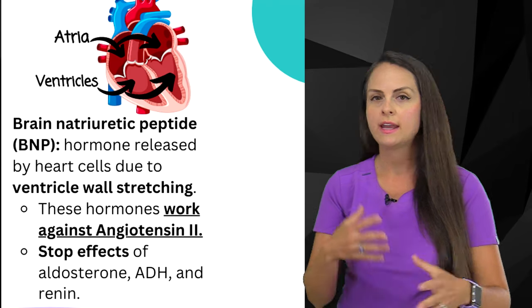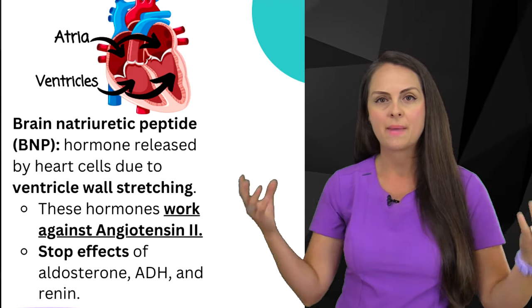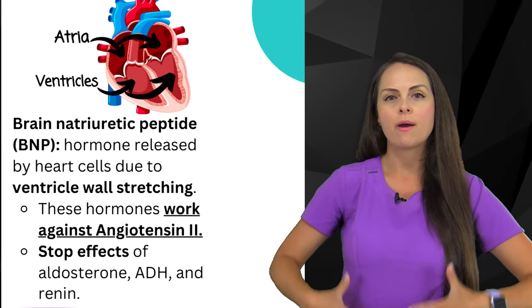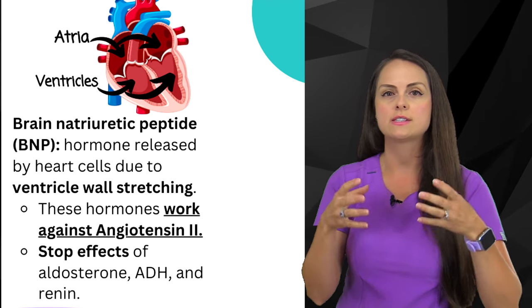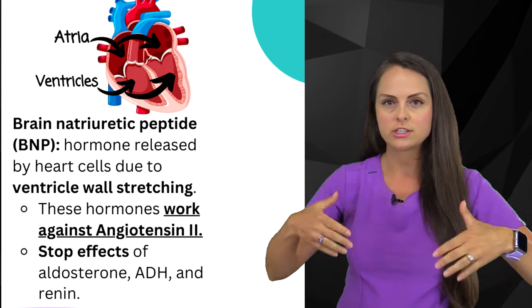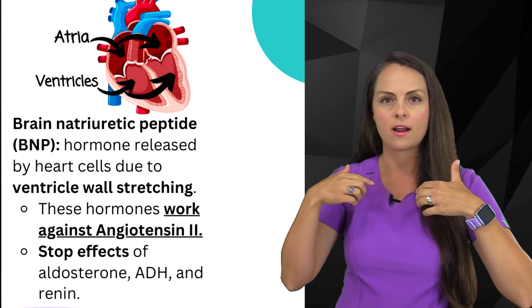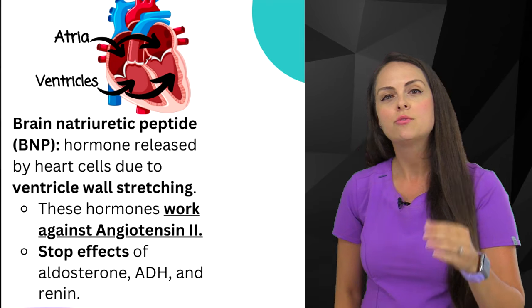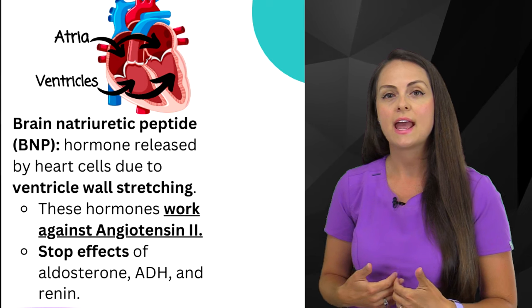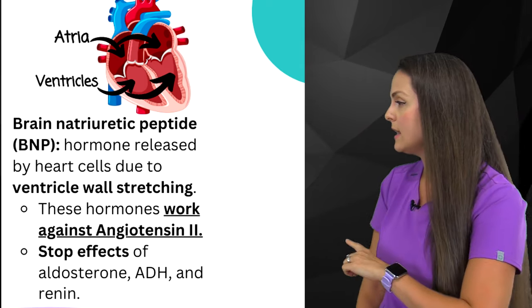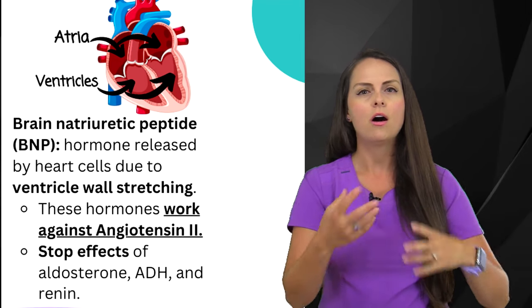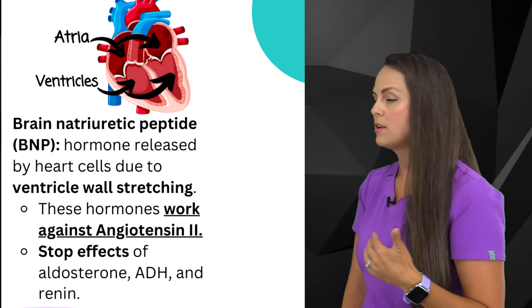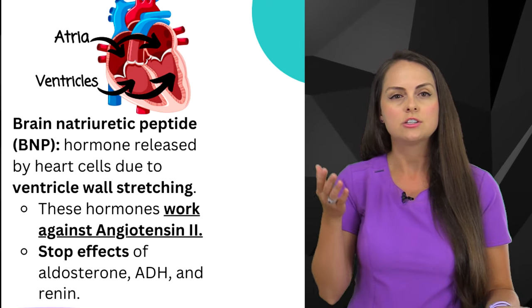When the RAS system, aldosterone, ADH, and thirst mechanism add water back into the blood, that fluid goes to the heart. If too much is added, the heart senses it because the atria and ventricles start to over-stretch, signaling that we may be heading into fluid volume overload. So ANP and BNP are secreted by those heart cells. These hormones actually work against angiotensin 2 — the star of the RAS system — stopping the effects of aldosterone, ADH, and renin so we don't go into fluid volume overload. It's a check-and-balance system for managing fluid.